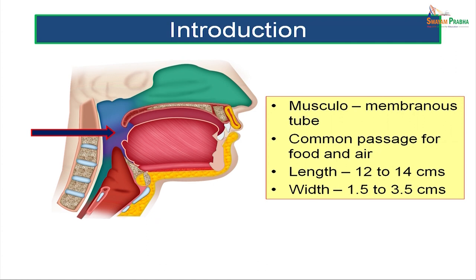Pharynx is a musculomembranous tube which is a common passage for both food and air — belonging to both the respiratory and alimentary systems. Its length is about 12 to 14 centimeters and the width varies between 1.25 to 3.5 centimeters. Maximum width of 3.5 cm is at the upper end; minimum width of 1.5 cm is at the lower end at the pharyngoesophageal junction.